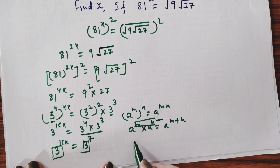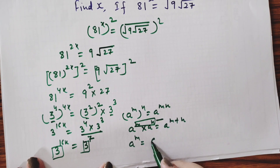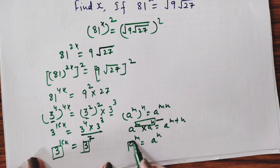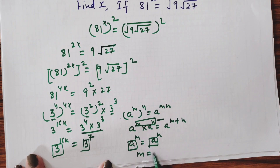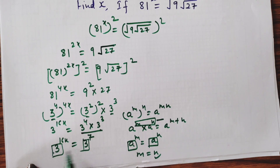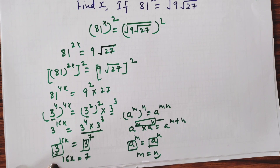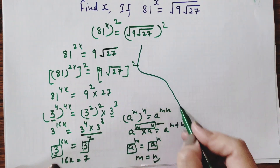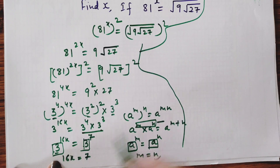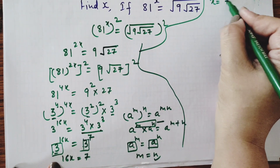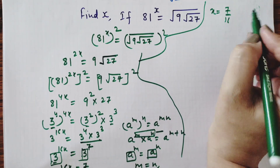So we will compare the powers. If we have the condition a^m = a^n and the bases are the same, then m equals n. So here, both bases are 3, therefore 16x is equal to 7. The x value is easily found: x equals 7 by 16.